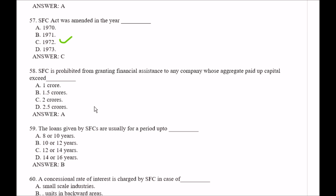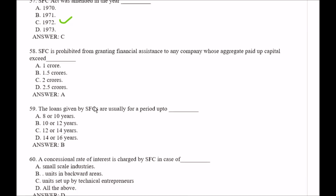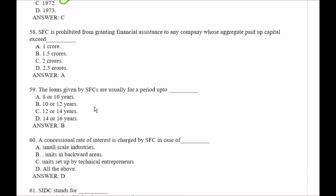Question number 58: SFCs is prohibited from granting financial assistance to any company whose aggregate paid up capital exceeds — Option A, 1 crore; Option B, 1.5 crores; Option C, 2 crores; Option D, 2.5 crores. The right answer is Option A, that is 1 crore.